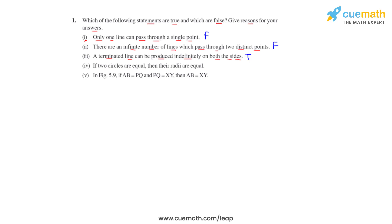Statement four says: if two circles are equal, then their radii are equal. When two circles are equal, the two circles are congruent — they coincide and overlap each other — which means their circumferences are equal. We can write: 2πr₁ = 2πr₂. The 2π cancels from both sides, giving us r₁ = r₂. So if two circles are equal, their radii are equal.